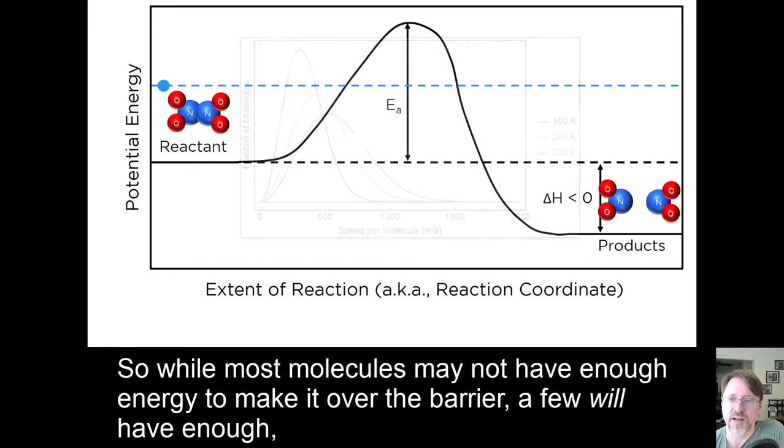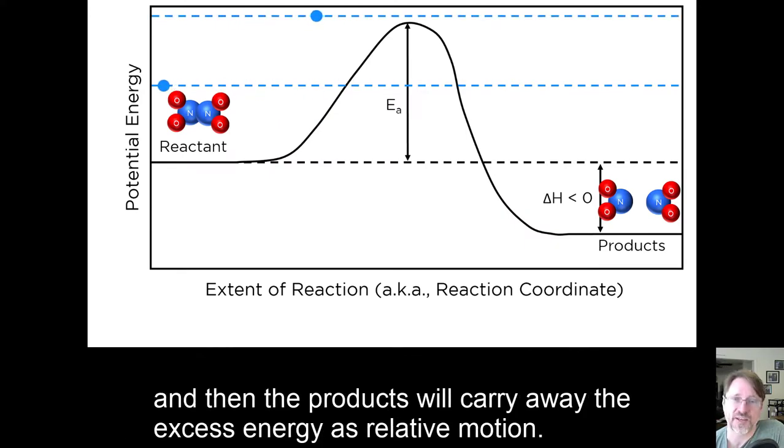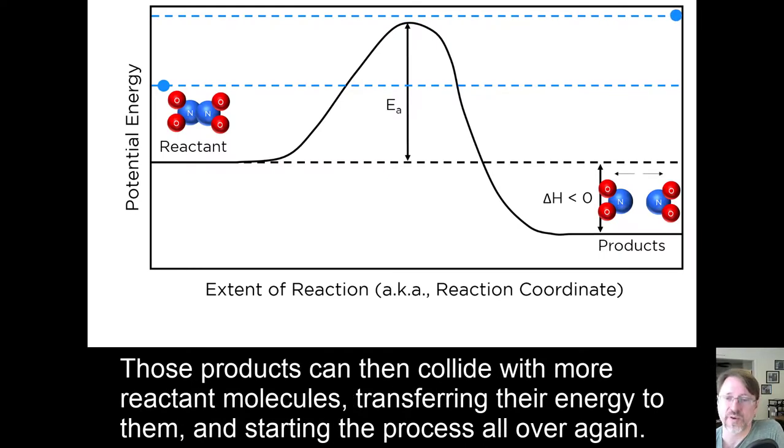So, while most molecules may not have enough energy to make it over the barrier, a few will have enough, and then the products will carry away the excess as relative motion. Those products can then collide with more reactant molecules, transferring their energy to them, and starting the process all over again.